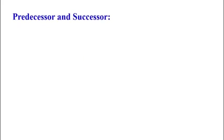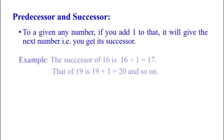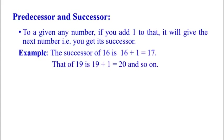Then predecessor and successor. For any given number, if you add 1 to it, it will give the next number — that means you get its successor. For example, the successor of 16 is 16 plus 1 equal to 17, and that of 19 is 19 plus 1 equal to 20, and so on.